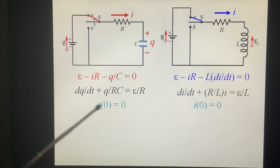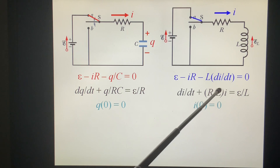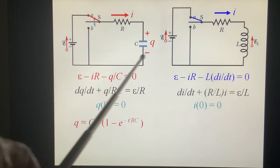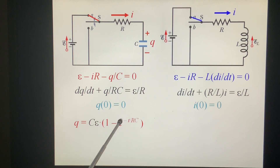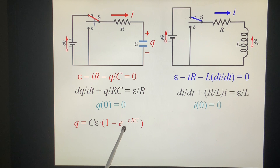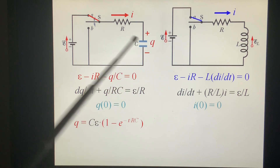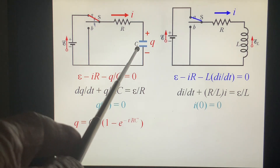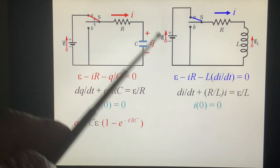We solve this differential equation with the initial condition. We get the answer: Q, the charge accumulated on this plate, equals C·epsilon times (1 minus e to the minus T over RC). When T equals 0, 1 minus 1 is 0, so there is no charge. When T approaches infinity, the exponential goes to 0 and Q equals C·epsilon, which is capacitance times voltage.